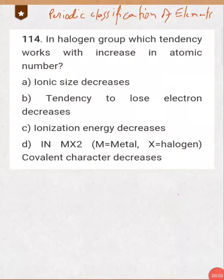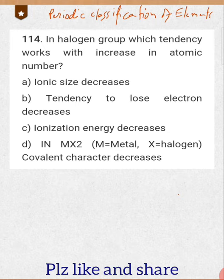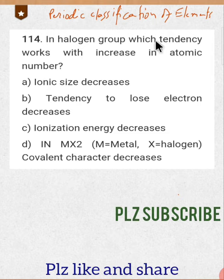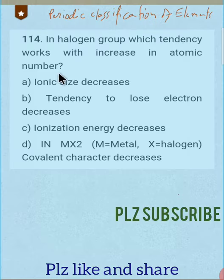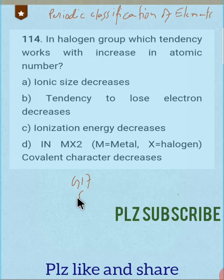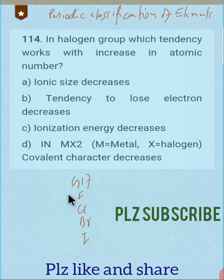Hello guys, in today's video I am going to solve some problems from periodic classification of elements. The first question is in the halogen group — group 17. In group 17, fluorine, chlorine, bromine, and iodine are present. We need to find which tendency works with increase in atomic number.